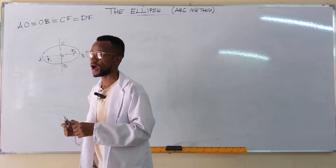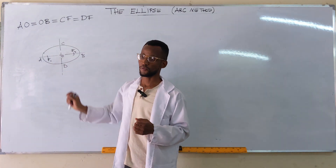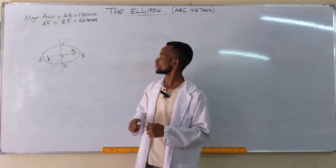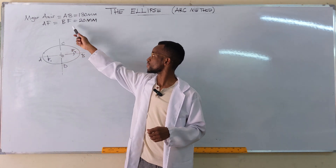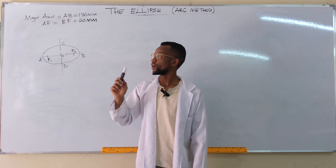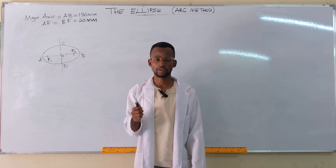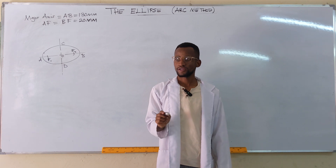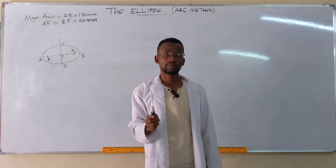When using the arc method for constructing an ellipse, we use the two focal points. In this example, what we've been given is the major axis and the position of the focal point on the major axis. We want to use the arc method to construct our ellipse, so we draw a line representing the major axis and mark the focal points on it.